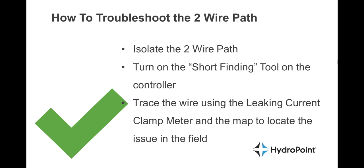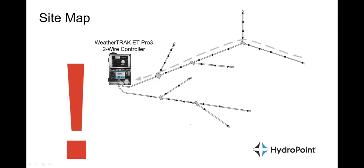Which brings us back to how to troubleshoot the 2-Wire path. We start by isolating the 2-Wire path, then we turn on the short finding tool on the controller, and trace the wire using the leaking current clamp meter and the map to locate the issue in the field. To troubleshoot a WeatherTrack 2-Wire in the field, I walk up to the controller, look at the 2-Wire interface, and read the milliamp reading on the 2-Wire path. If it is out of line, the first thing I do is isolate which 2-Wire path has a fault on it.